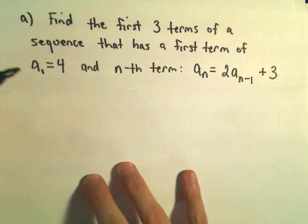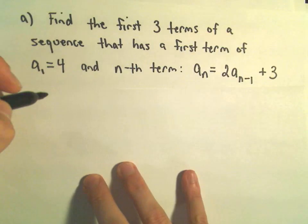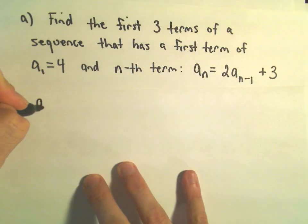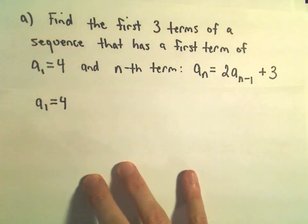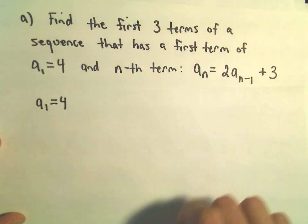To find the first three terms, well, we already know the first term — the first term is 4 — so there's nothing to do there.